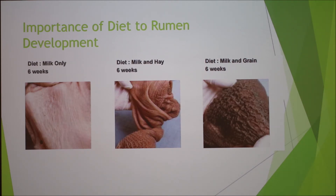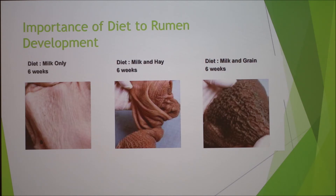An audience member asked whether there is some product that could be given to the calf to ensure the right bacteria and protozoa are introduced — a jump start beyond relying on the environment. The presenter responded that concentrates are useful for introducing the right bacteria into the rumen.